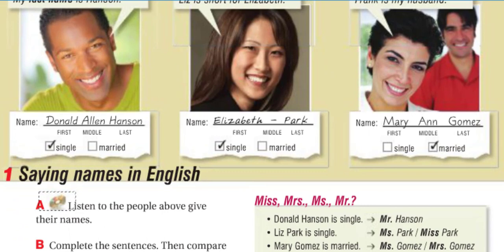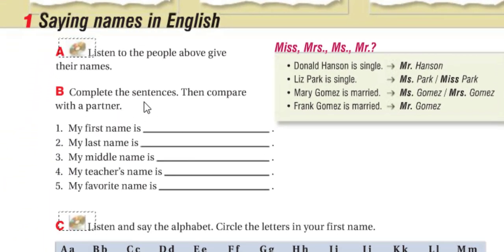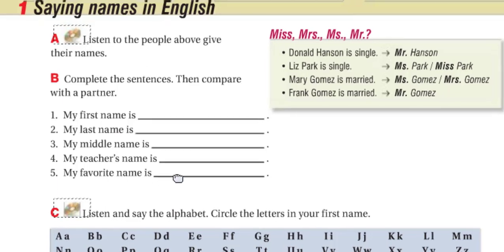Now you have to complete these sentences, then compare with a partner. My first name is... write your first name here. Your last name here. If you have a middle name, write it here. What is your teacher's name? Teacher Martinez.